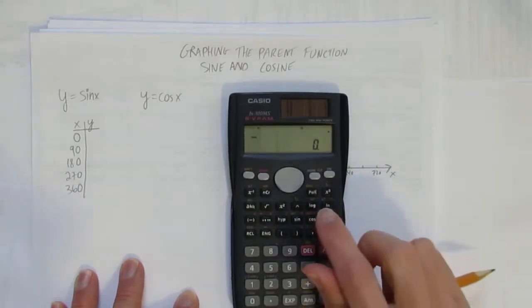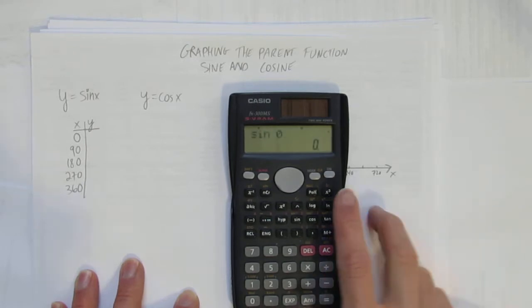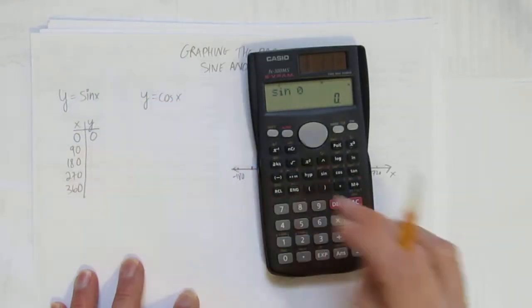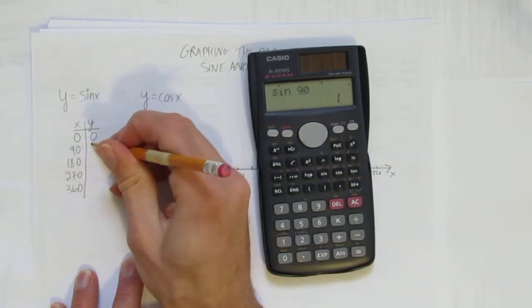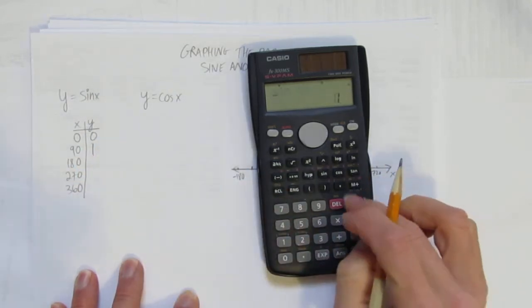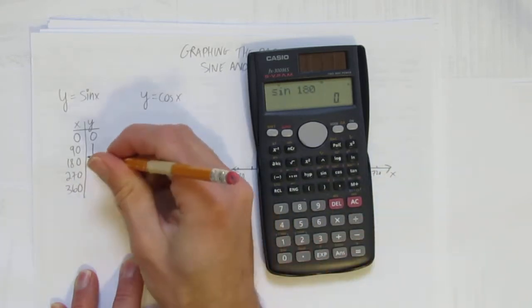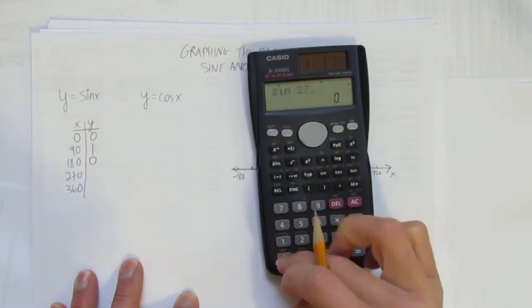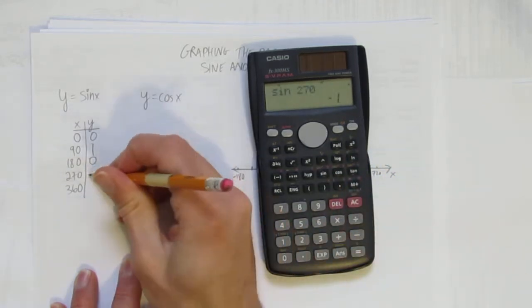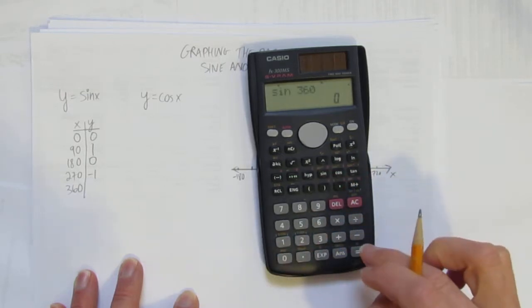Now we can calculate. What's the sine of 0? You get 0. What's the sine of 90? 1. What's the sine of 180? 0 again. No surprise. What's the sine of 270? Negative 1. And what's the sine of 360? 0.